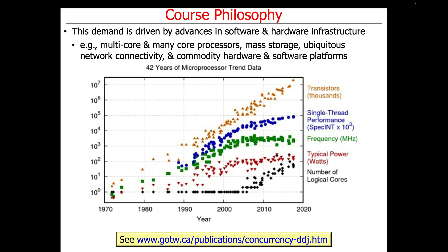The demand for programmers who understand concurrency is driven by advances in software and hardware infrastructure, including the advent of multi-core and many-core processors, mass storage, ubiquitous network connectivity, as well as commodity hardware and software platforms. As seen over the past 20 years or so, Moore's Law has morphed a bit from doubling performance every 18 to 24 months to doubling the number of transistors on a chip, leading to an increase in the number of processor cores.